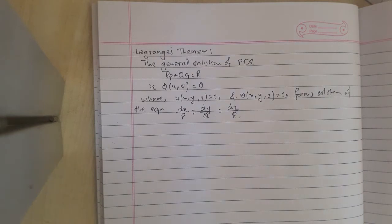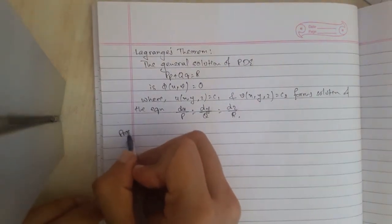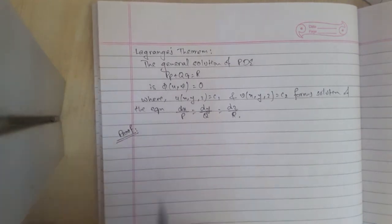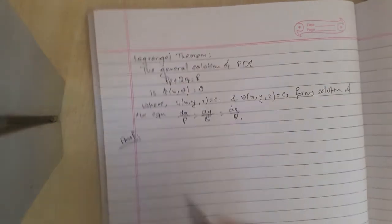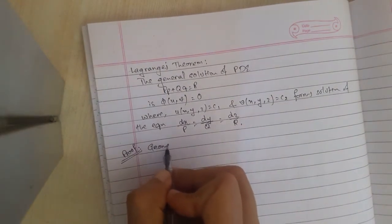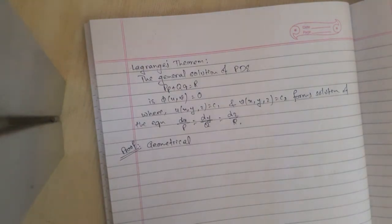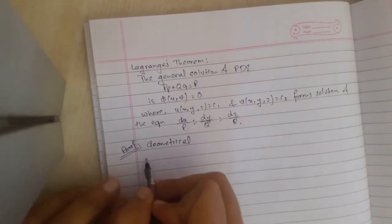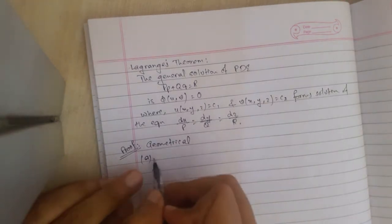In order to prove this theorem, I chose a geometric proof because I feel the geometric one is more intuitive and you can see what's happening in the theorem. It's beautiful, so why not share it. In order to prove it geometrically, we separate our proof into two different parts, namely A and B.